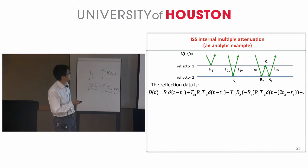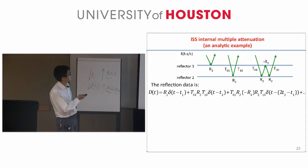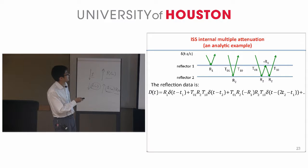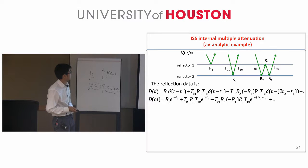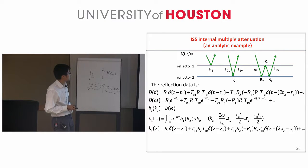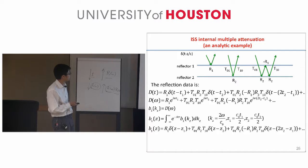The third event is the internal multiple. When it travels down and back to the receiver, it experiences T0-1, then a reflection R2, then another reflection minus R1, then another reflection R2, and finally transmission coefficient T1-0. We make a Fourier transform of the data into the frequency domain, and B1 of Kz — where Kz is two omega over the water speed — is equal to D of omega. We then take a Fourier transform into the pseudo-depth domain to get B1 of Z, which is closely related to the data.